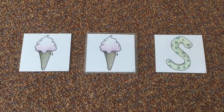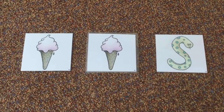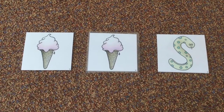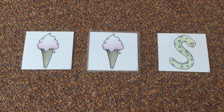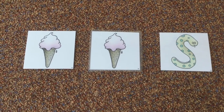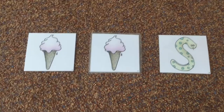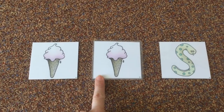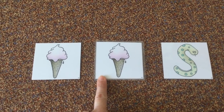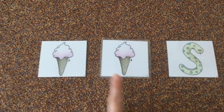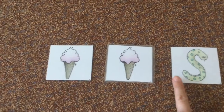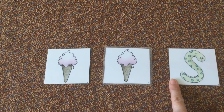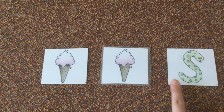Which of these pictures are the same? Have a good look. The ice cream and the ice cream are the same. The snake is different — that's not an ice cream.